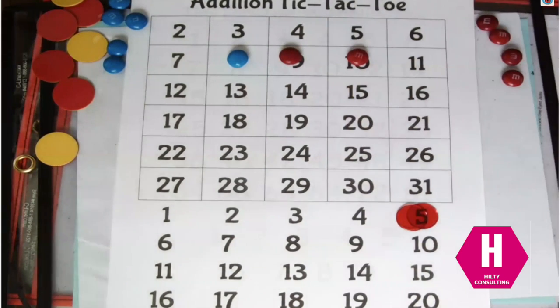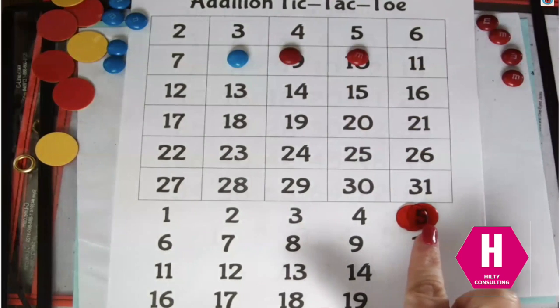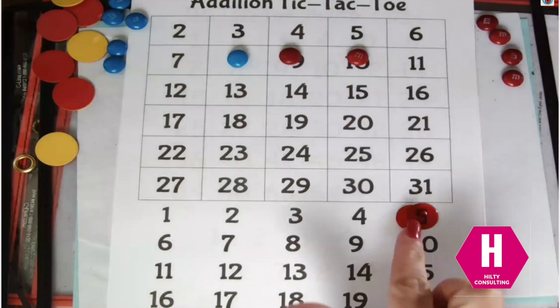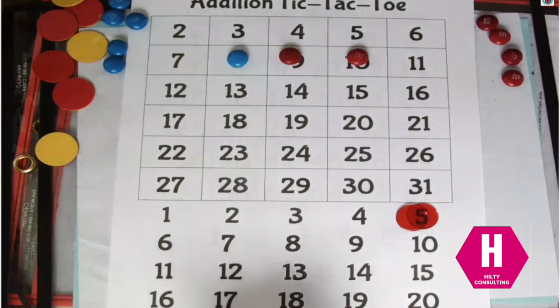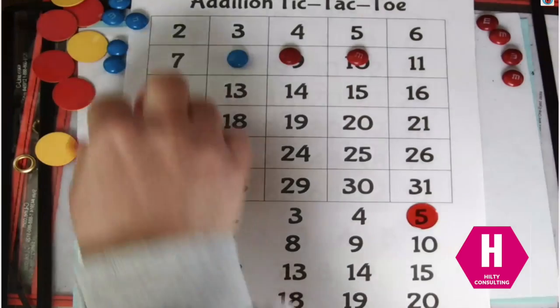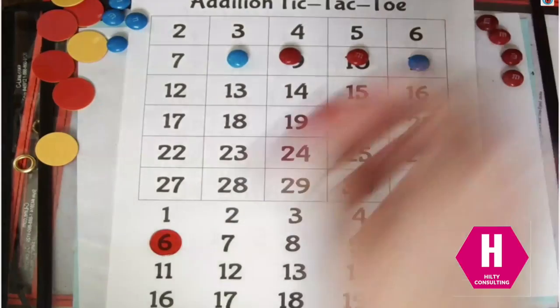Okay so what'd you do? Okay so he doubled up on the five which you definitely can do. That means I have to use the five in my equation. So I'm going to do five plus six equals eleven and block him right there.